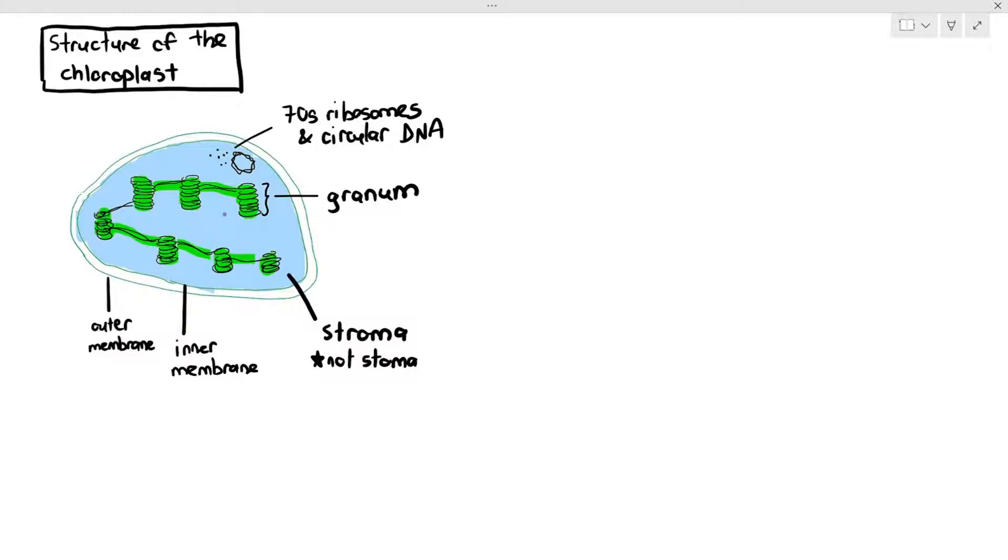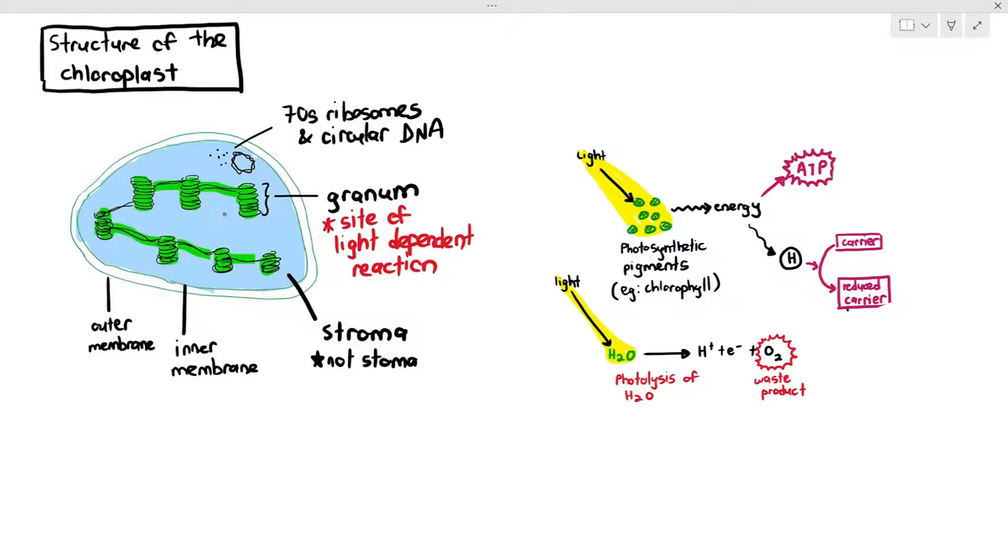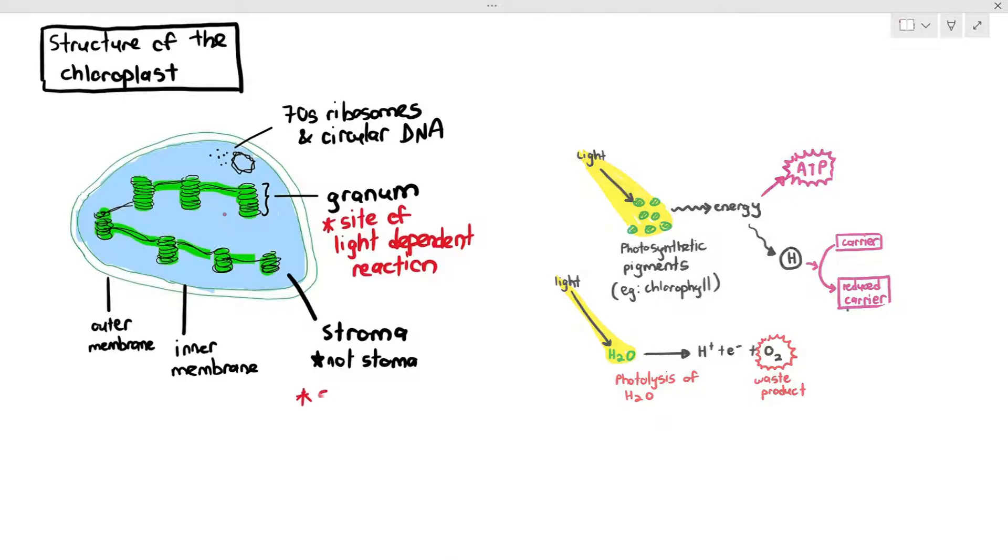Now, what we first have to understand is the granum is the site of light-dependent reaction, where they have to absorb light, and they have to produce ATP, they have to produce the reduced hydrogen carriers, and they also have to produce oxygen through the photolysis of water. And the stroma is the site of light-independent reaction.